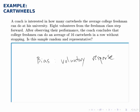Voluntary response bias also comes into play in surveys that have questions where certain responses are more favorable than others.